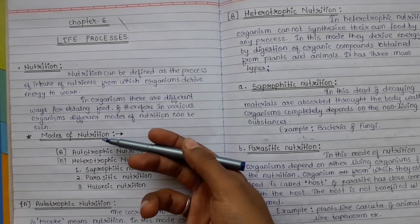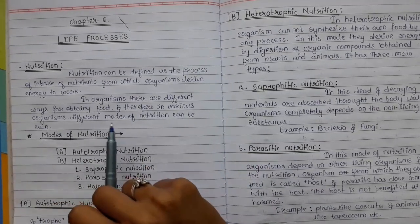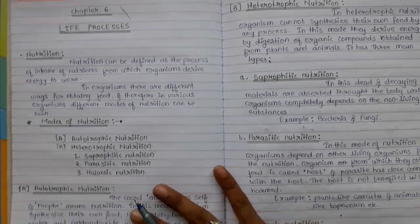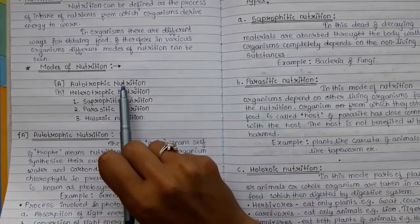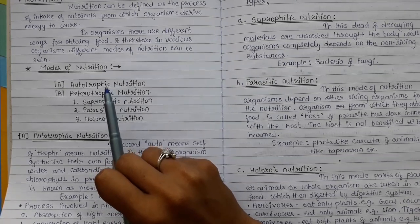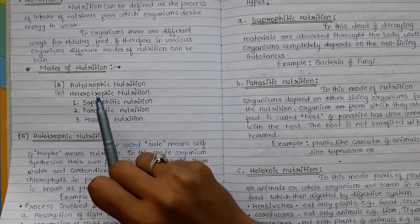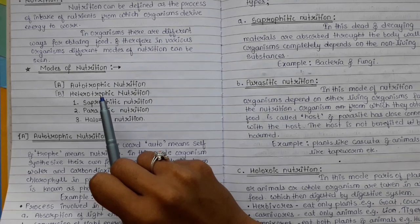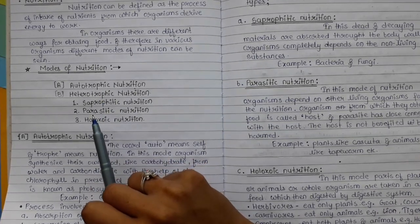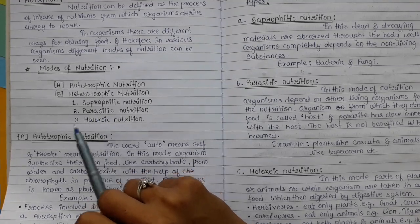There are different ways organisms obtain food, and we will study these as modes of nutrition in various organisms. The two main modes are: autotrophic — where the organism makes its own food — and heterotrophic — where the organism does not make its own food but depends on other ways such as saprophytic, parasitic, and holozoic.